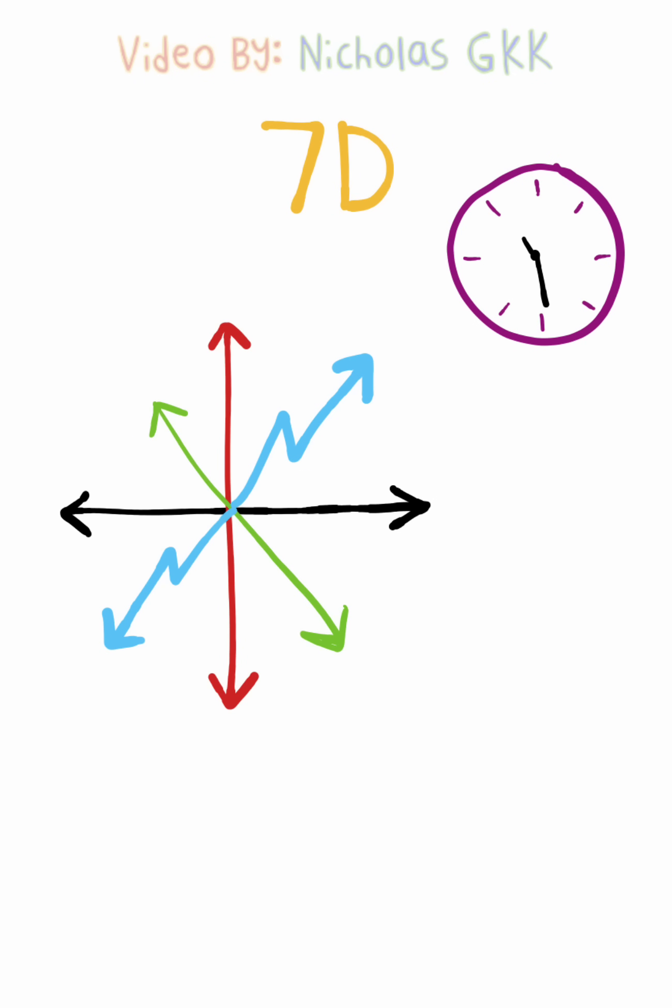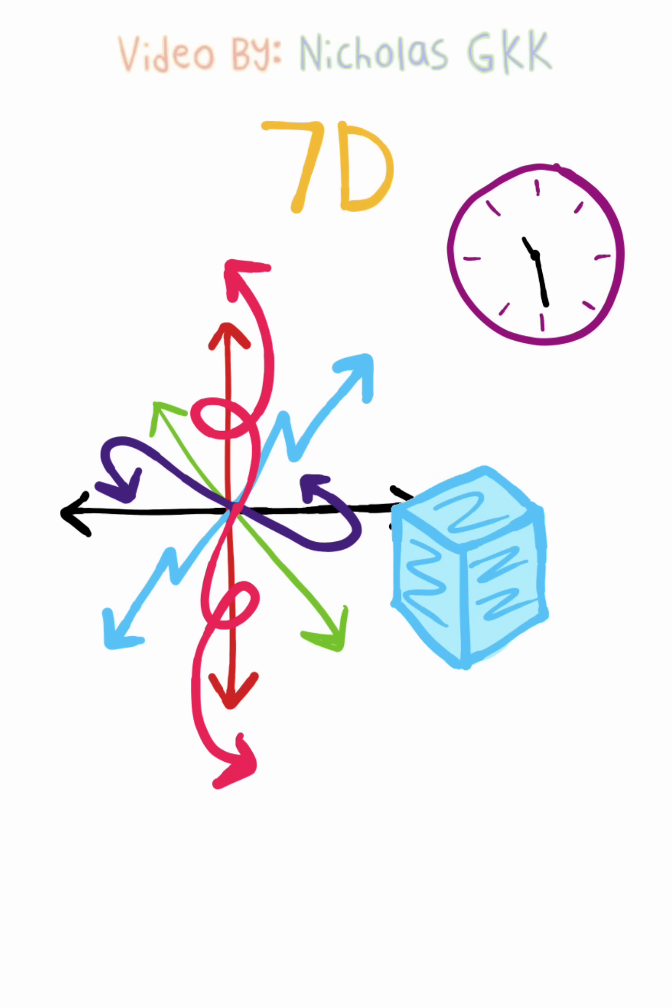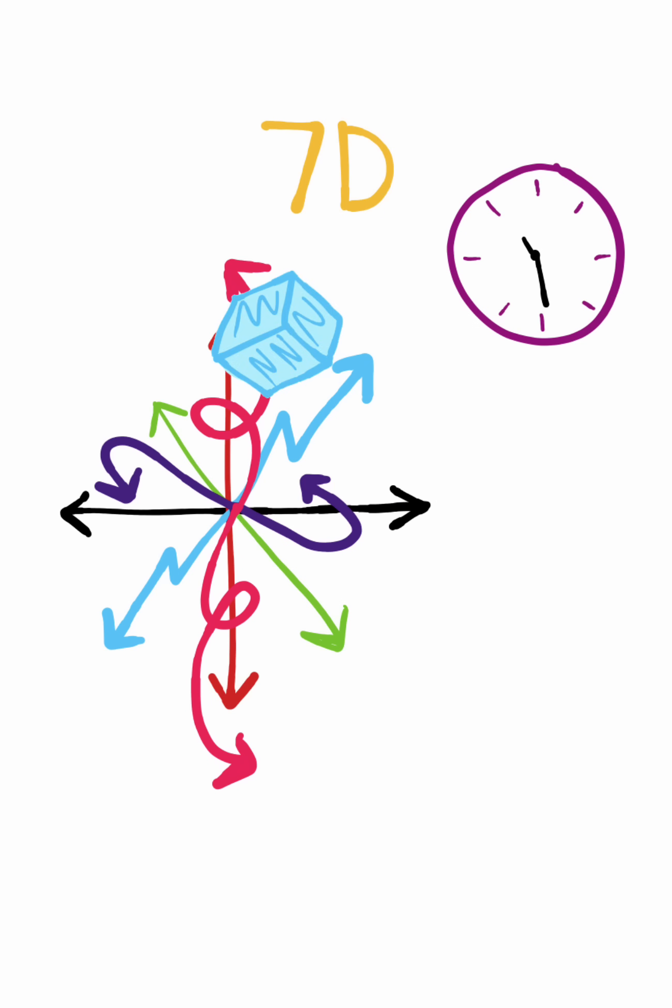So this would grant us six additional directions, meaning our common three-dimensional shapes would now have an infinite combination of vectors based on its position in these new hyperspaces.